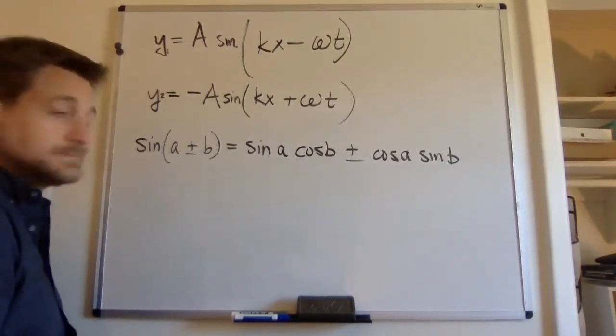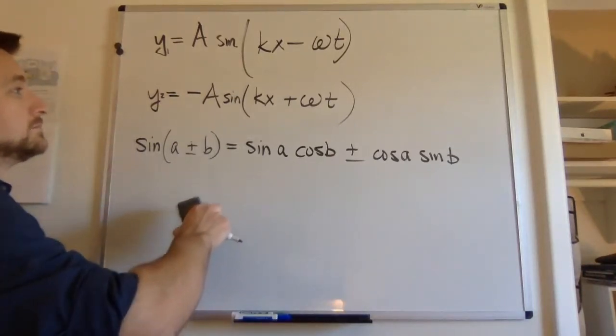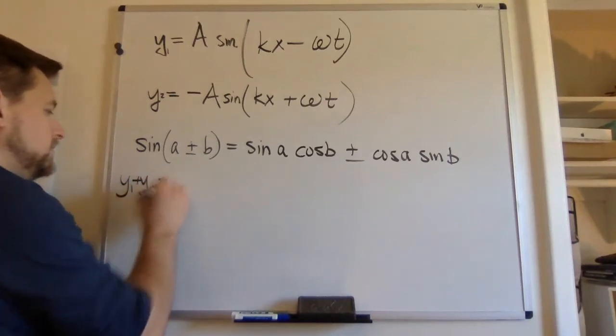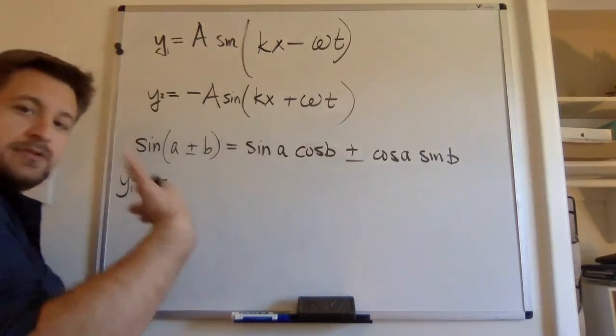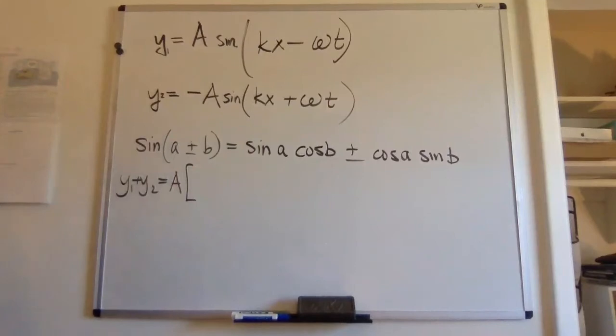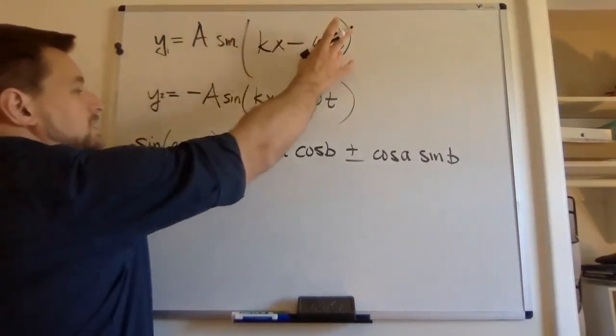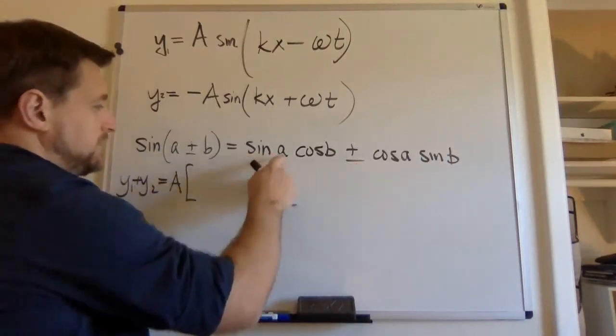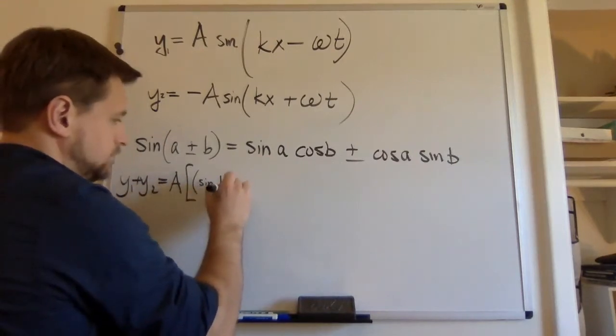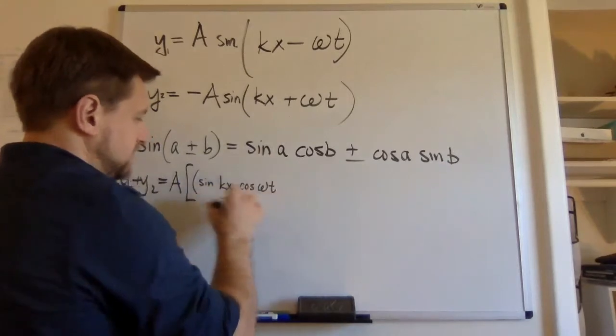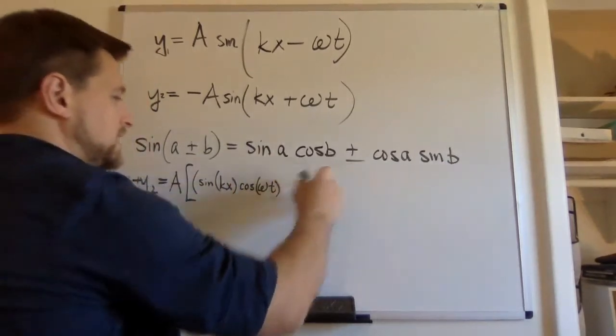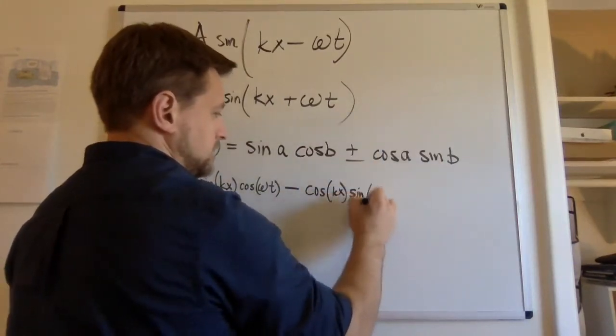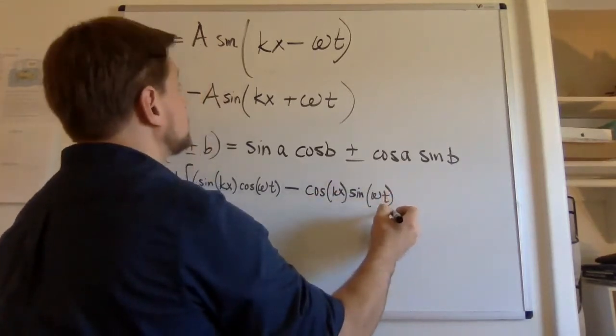Okay. Ready? y1 plus y2 equals. They both start with an A. So I'm going to pull the A out front. Sine of something minus something. Well, that's sine of something minus something. So we can rewrite it this way using a minus sign. We've got sine of the first thing, cosine of the second thing. Minus cosine of the first thing, sine of the second thing. That's this.